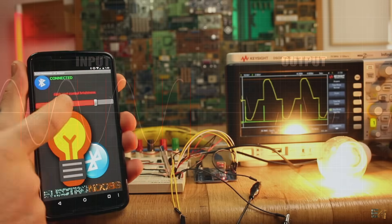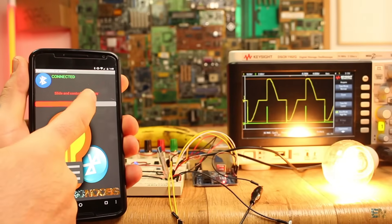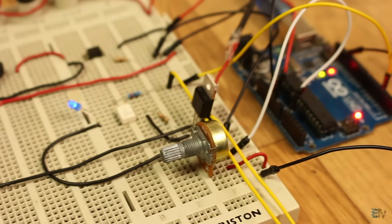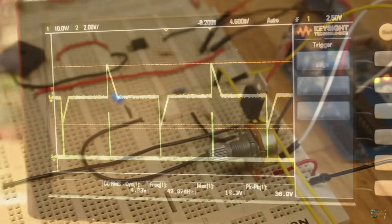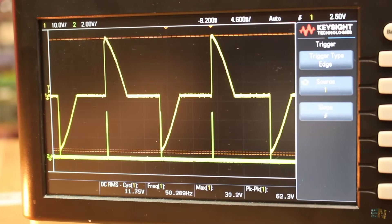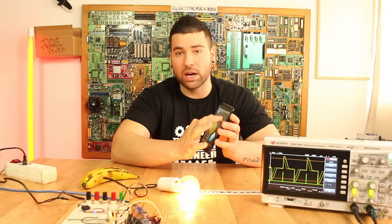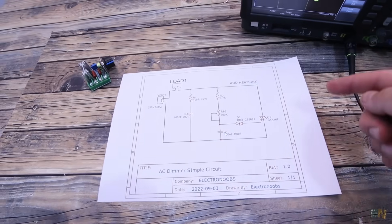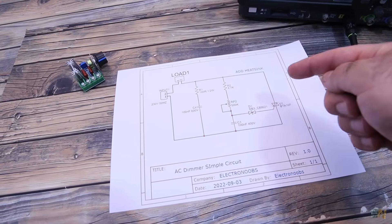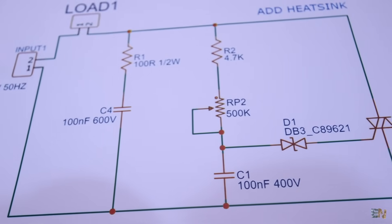We've seen more about this topic in the Bluetooth triac controller where we read the zero crossing with Arduino and create the firing pulse at the triac gate to control the power using Bluetooth data from a smartphone. But this time this circuit is fully analog. It has no microcontroller or digital component, only passive components.